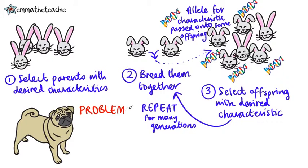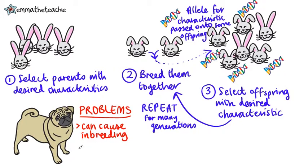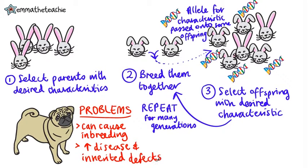There are some problems with selective breeding. It can lead to inbreeding, where some breeds have an increased risk of disease or inheriting genetic defects. For example, pugs are known to have an increased risk of eye diseases, and they often have breathing problems.